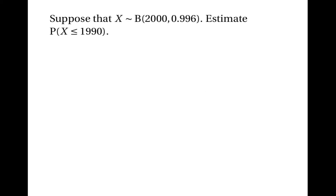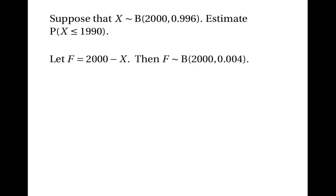Now let's look at another example. Suppose that x has the binomial distribution with 2000 trials and 0.996 as the probability of success, and we want to estimate the probability that x is less than or equal to 1990. This time we can't use the Poisson approximation straight away, because although n is large, p isn't close to 0. We need a trick: think about the number of failures instead of successes. Let f equal 2000 minus x, so f gives the number of failures. Then f still has the binomial distribution with 2000 trials, but the probability is 0.004 instead of 0.996. Now n is large and p is very close to 0, so we can use the Poisson approximation.